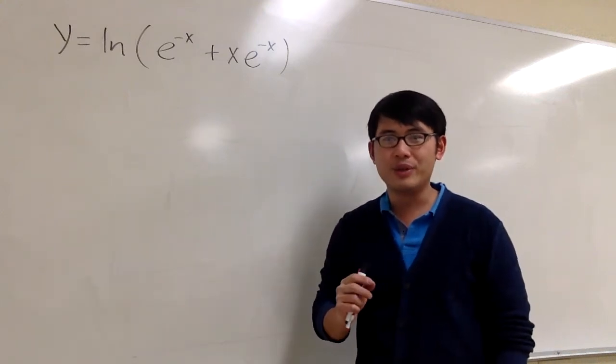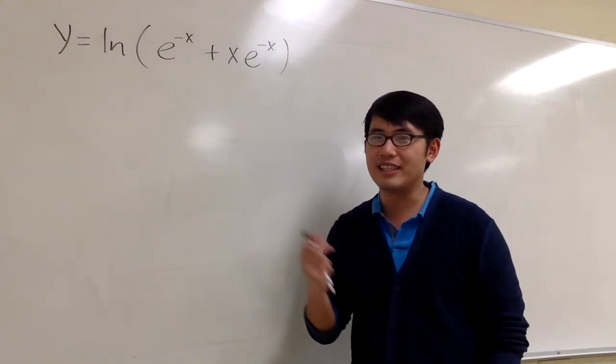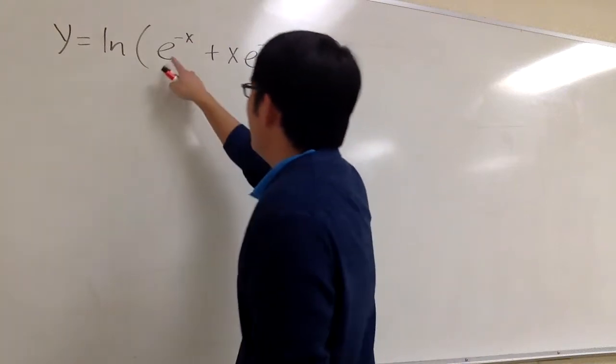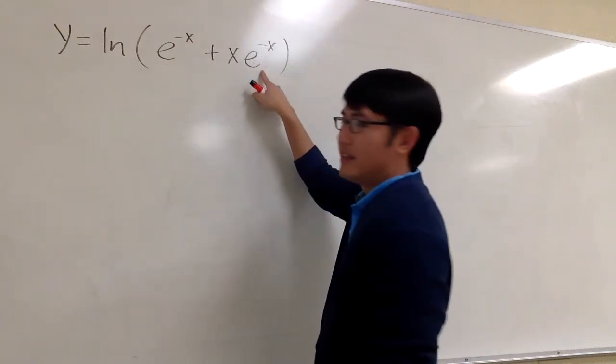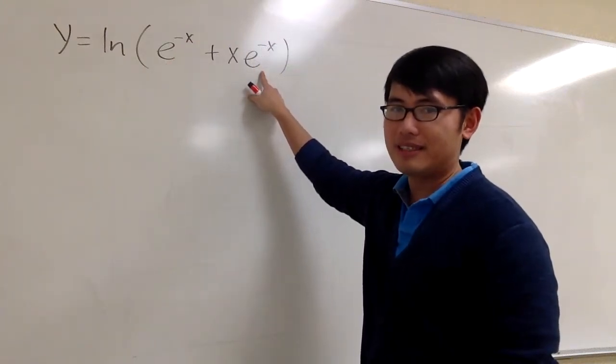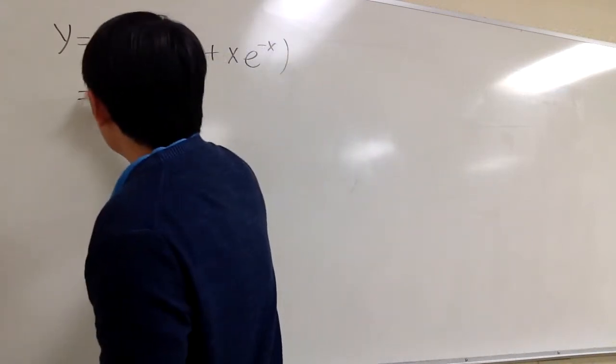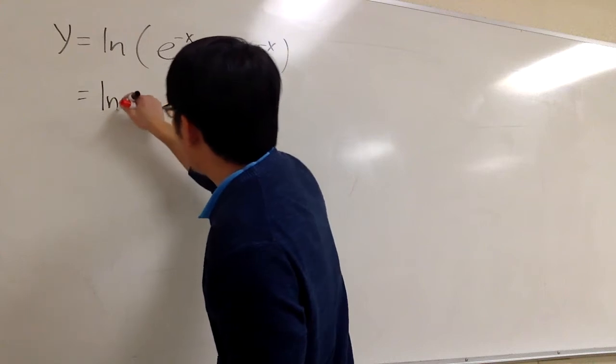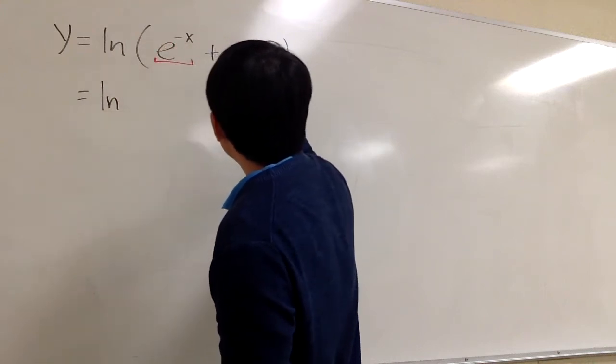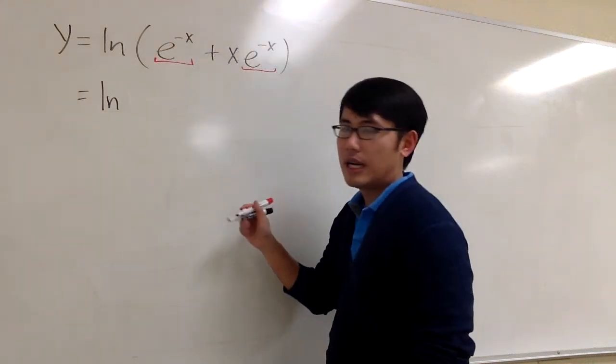A few things we can do to make this equation much easier. Notice that both of these terms have e to the negative x, so we can factor the e to the negative x out. I will rewrite my function. This is going to be ln, but the e to the negative x here and the e to the negative x here, I will factor this out.